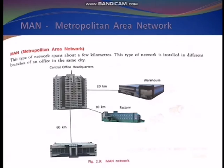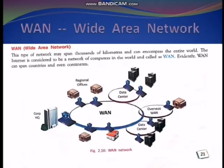Now we move on to metropolitan area network, that is MAN. This type of network spans about a few kilometers — such as 10, 20, or 60 kilometers. They are installed in different branches of an office in the same city; within the city we can have a metropolitan area network. Next is wide area network — WAN. This type of network spans about thousands of kilometers, through the entire world. The internet is considered to be the largest WAN and it can span countries and even continents.